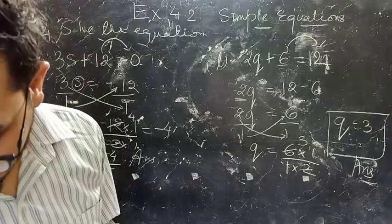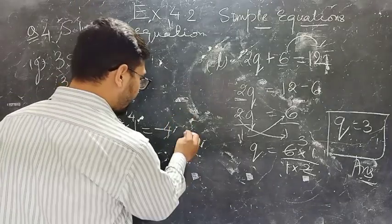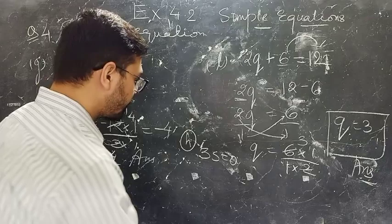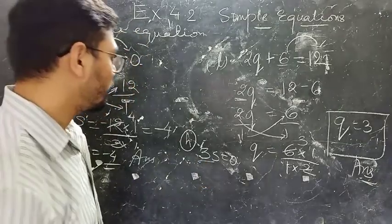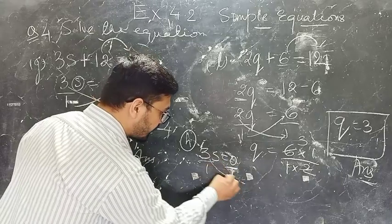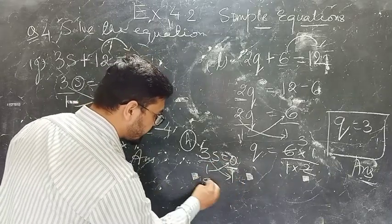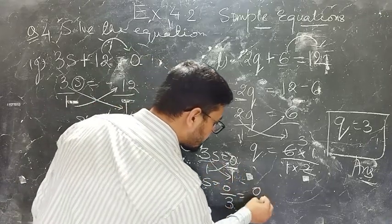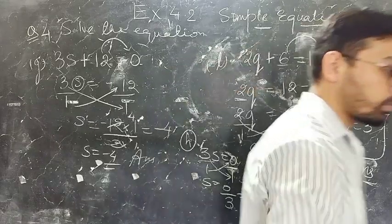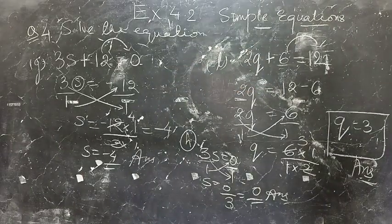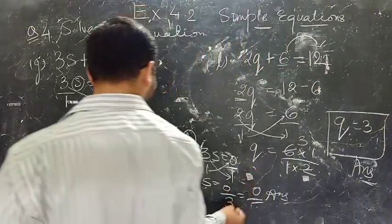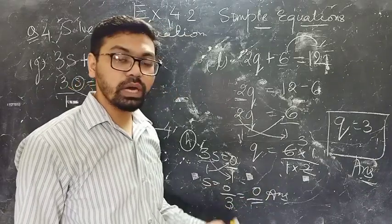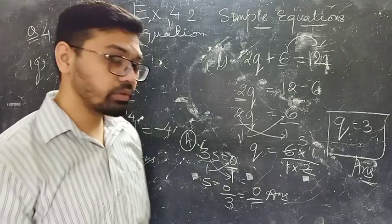Part H: 3s equals 0. Cross multiply 3 and 1. S equals 0 divided by 3, which is 0. Zero upon any number is 0. If you divide 0 by any other number the answer is 0. But if you divide a number by 0, the answer is indefinite — or you can say infinite.